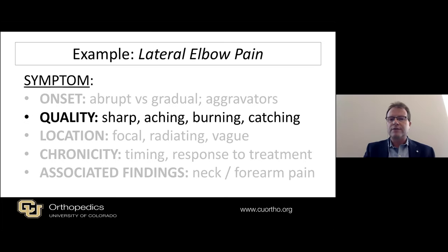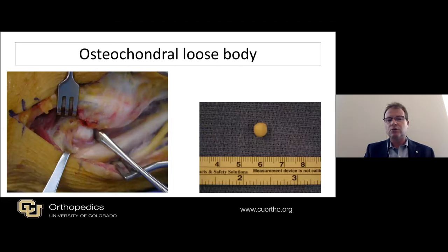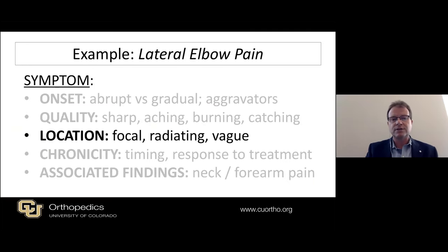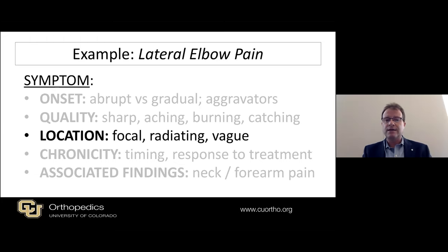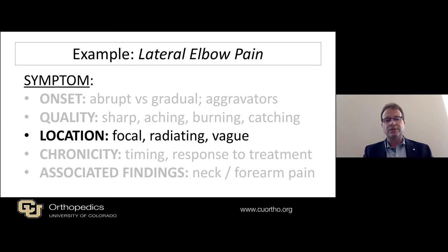If we're thinking about the quality of symptoms, get a sense of whether this is sharp and localized, an aching sensation, or burning — which may be nerve related — or catching, for example, in somebody with an osteochondral loose body causing locking or catching sensation in the mid-arc of motion, as opposed to someone with terminal extension or terminal flexion stiffness. Location is really critical, and having patients describe where their symptoms are — the more vague, the less reliable our ability to localize to a tendon, ligament, musculotendinous unit, joint, or nerve.